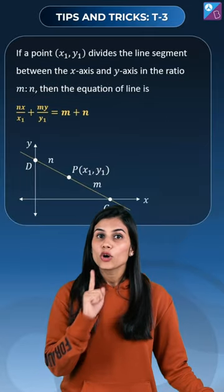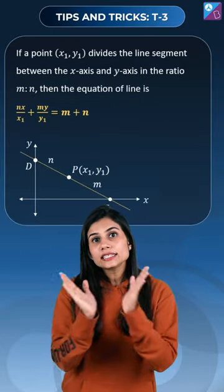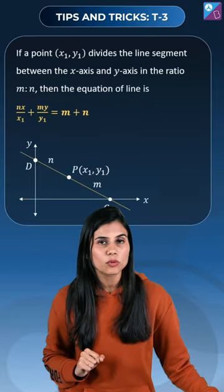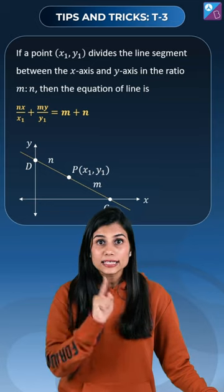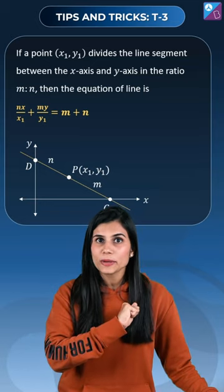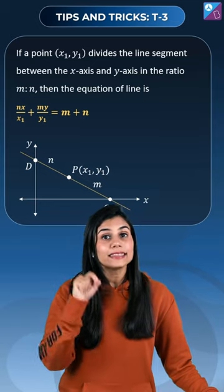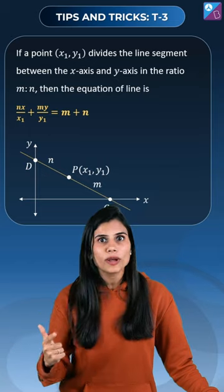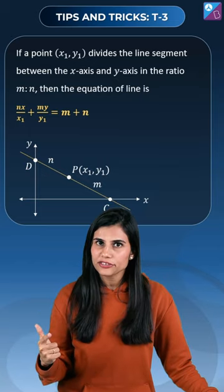Number three: when you have the intercepted portion of a line between the x and the y axis such that a point divides it in the ratio m is to n, then this trick allows you to write the equation of that line directly.